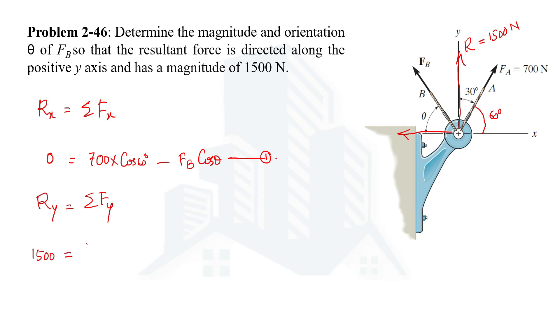The y component of Fa force will be 700 sin 60 degree because it will be positively upward along positive y-axis. Similarly the y component of Fb will also be directed along positive y-axis and positive, but we don't know the value of Fb as well as theta.